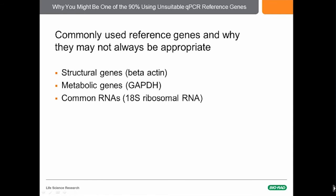Where can you find good reference genes? There are commonly used ones that turn up in a lot of literature, such as structural genes like beta-actin — which, as we'll see in subsequent slides, is not always perfect. There are constitutively expressed metabolic genes like GAPDH, a very commonly used reference gene, which is good in many instances but not always. There are also common RNAs like the 18S ribosomal RNA, which was popular at one time but is expressed at such a high level that it's fallen out of favor. People like to have reference genes expressed at a similar level to their gene of interest, but that's not always critical.